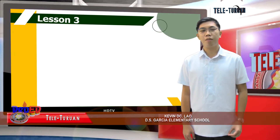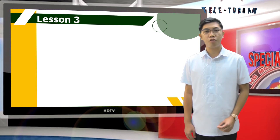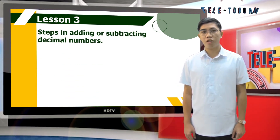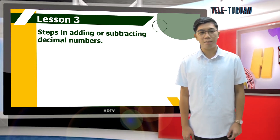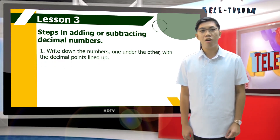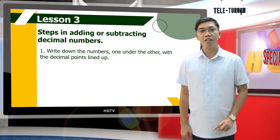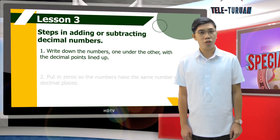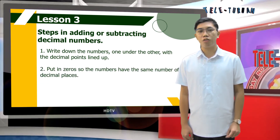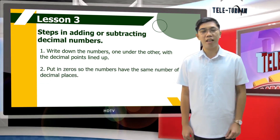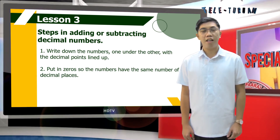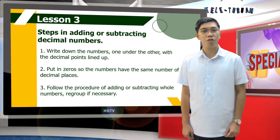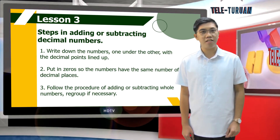Our next topic will be about adding and subtracting decimal numbers. To add or subtract decimals, follow these steps. Number one, write down the numbers one under the other with the decimal points lined up. Number two, put in zeros so the numbers have the same number of decimal places. And number three, follow the procedure of adding or subtracting whole numbers. Regroup if necessary.